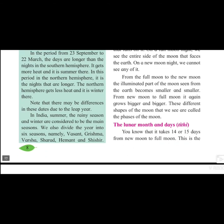In India, summer, rainy, and winter are considered the three main seasons. In our India we know these three main seasons: summer which is called Unara, winter which is called Hivara, and rainy which is called Pausa.